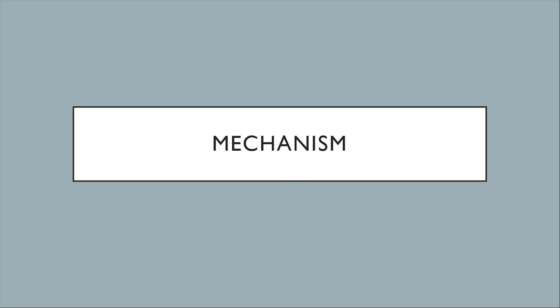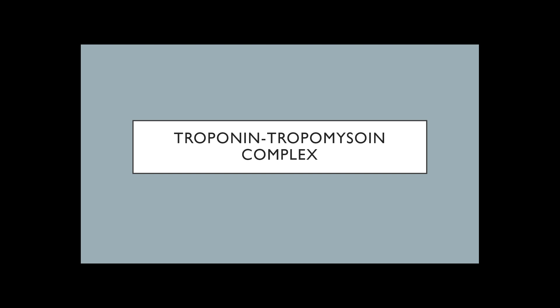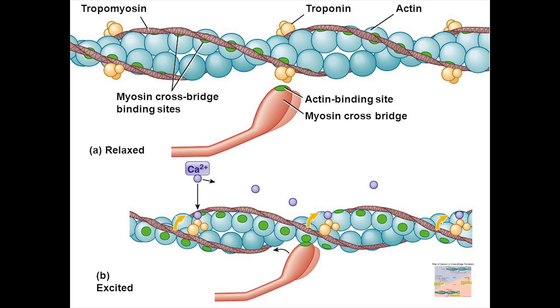Now let's move on to the mechanism. Why are actin and myosin not always bound together, given their very strong attraction and affinity for each other? This inhibition is caused by the troponin-tropomyosin complex. Researchers placed actin molecules in proximity to myosin molecules and saw that the myosin heads immediately attached to the actin molecules — until they added the troponin-tropomyosin complex. When added, the attraction could not be made, as the complex physically covers the active sites to which the myosin heads would attach.